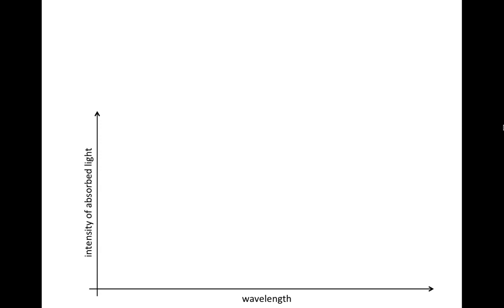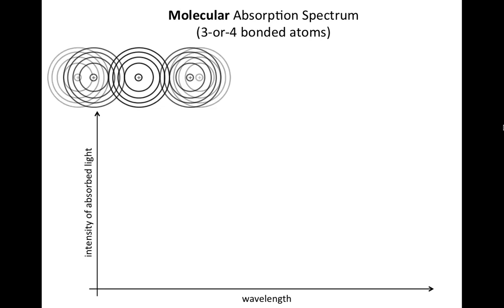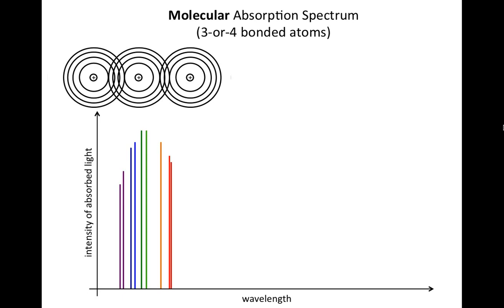Now molecules are a little bit more diverse. They have three or four, or however many, bonded atoms. And when these atoms bond, the electron energy levels mix together. So now there's a wider range because this mixing enables more opportunities. It creates new energy levels.